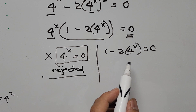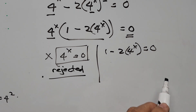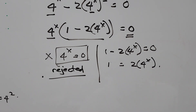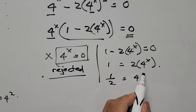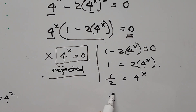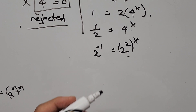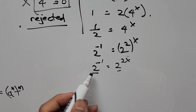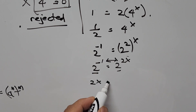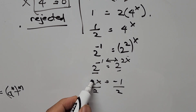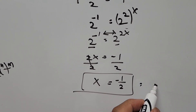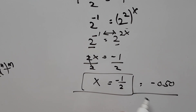For the other factor: 1 minus 2 times 4 to the power of x equals 0, so 1 equals 2 times 4 to the power of x, giving 1 over 2 equals 4 to the power of x. Now 1 half is 2 to the negative 1, and 4 is 2 squared, so 4 to the power of x is 2 squared to the x, which is 2 to the 2x. Same base: 2x equals negative 1, so x equals negative 1 half, or negative 0.5. That's our final answer.